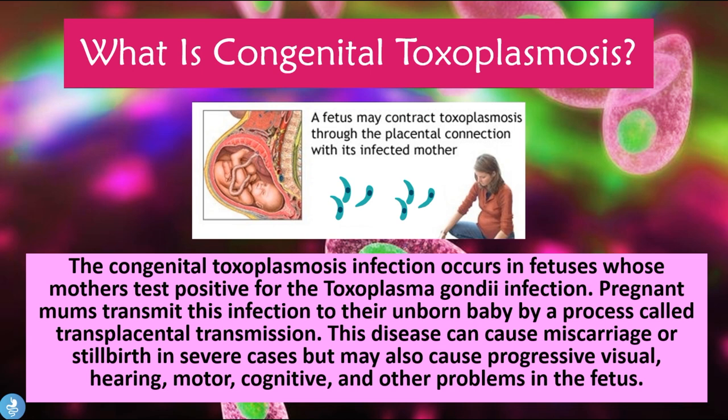Congenital toxoplasmosis infection occurs in fetuses whose mothers test positive for the Toxoplasma gondii infection. Pregnant moms transmit this infection to the unborn baby by a process called transplacental transmission. This disease can cause miscarriage or stillbirth in severe cases, but may also cause progressive visual, hearing, motor, cognitive, and other problems in the fetus.